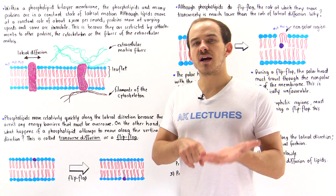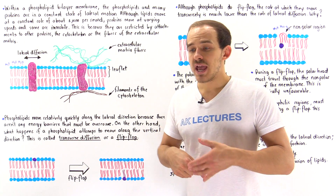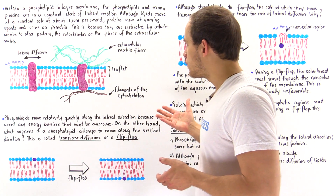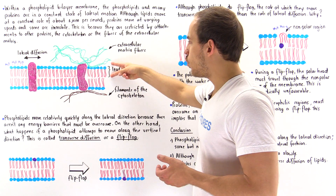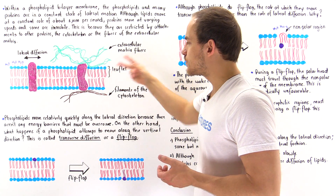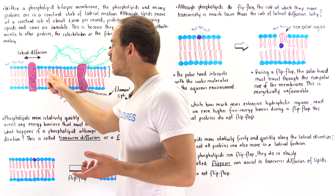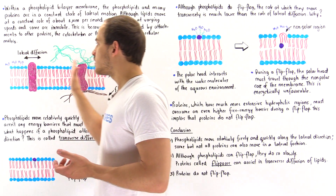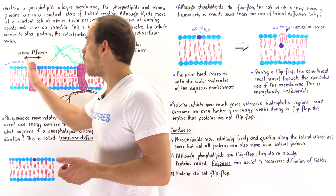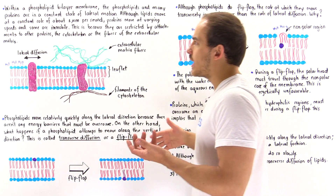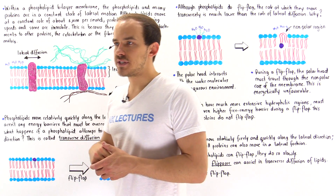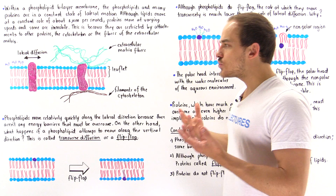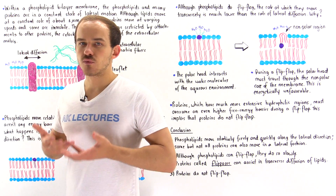Previously we discussed lateral motion or lateral diffusion. If we take a look at the membrane, we have two sides — two leaflets, one leaflet and the opposing leaflet. The individual phospholipid molecules along any leaflet can move relatively quickly and easily along that leaflet, at a rate of about one micrometer per second. Proteins within the membrane can also move along that membrane in a lateral direction.